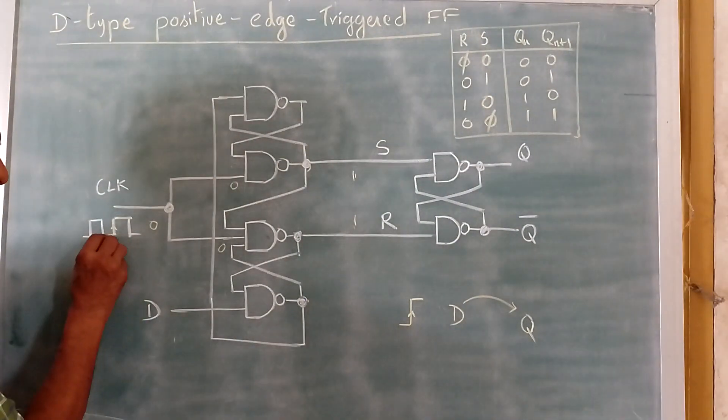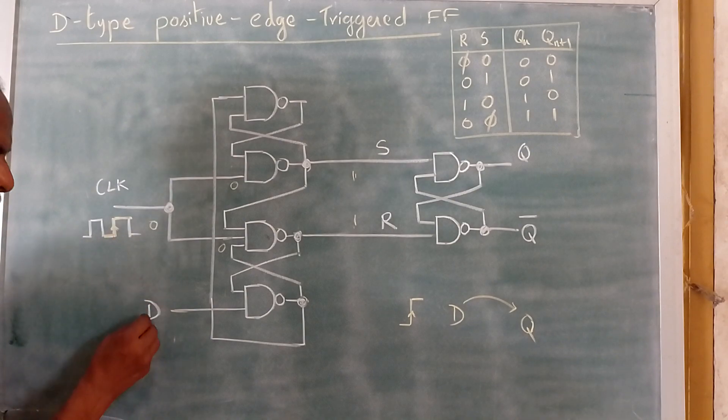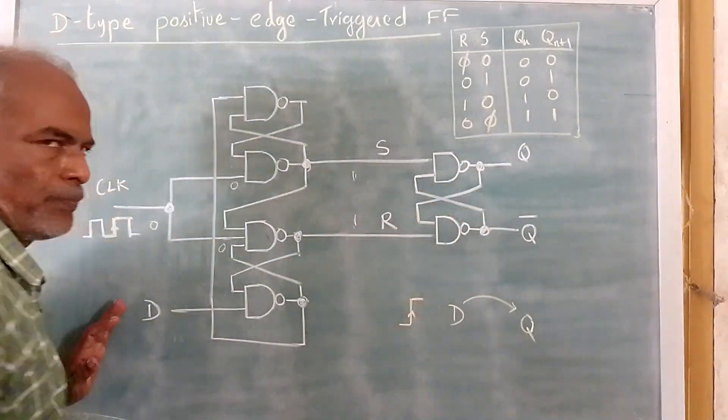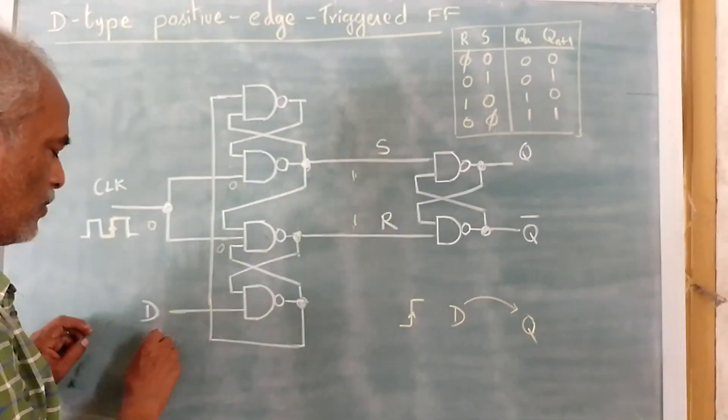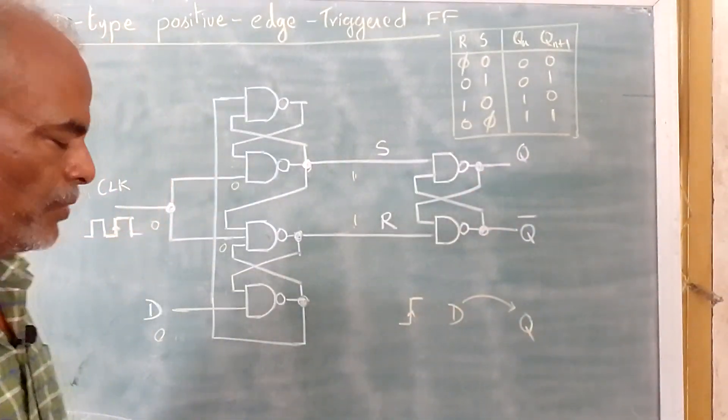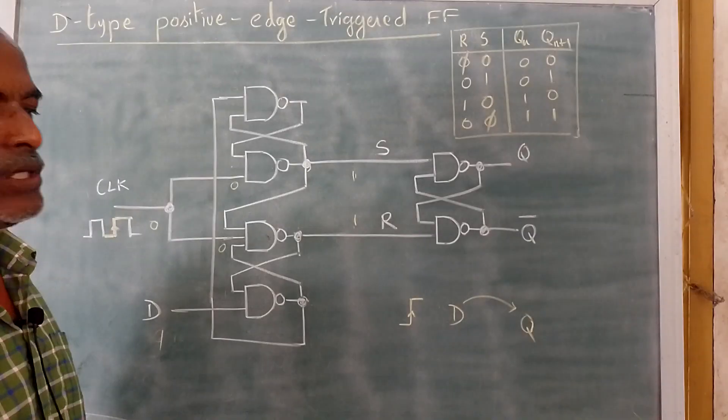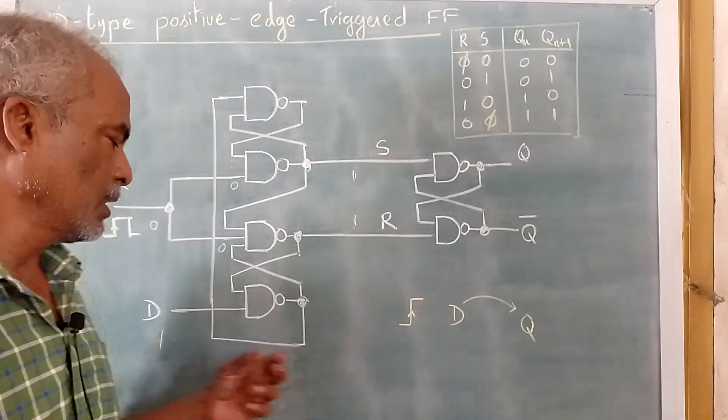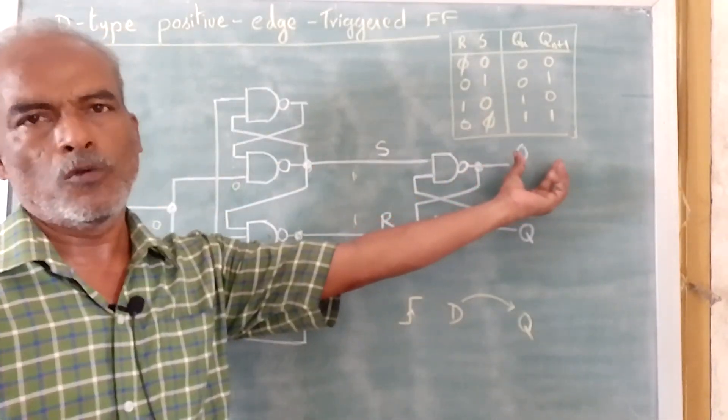When a clock input, this is for 0. When the positive edge triggered flip-flop, when it rises and goes to the positive level, now whatever the D input is there, it appears in Q. That is, it is having one bit delay. But if D is 0, the output Q is also 0. If D is 1, the output is also 1. That is, when it is positive edge triggered, whatever the input at D, the same input will appear at the output.